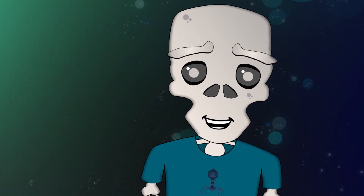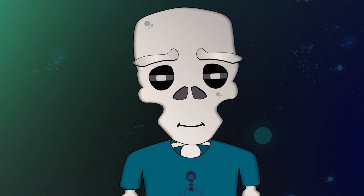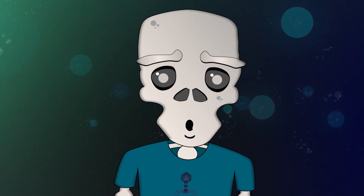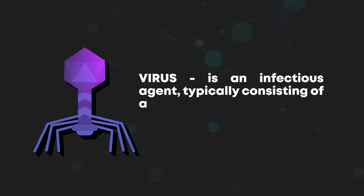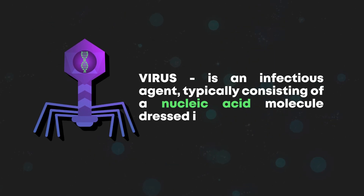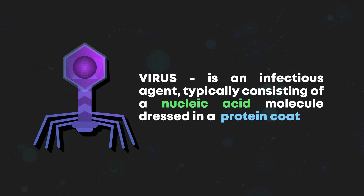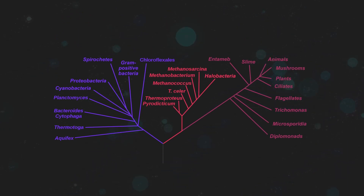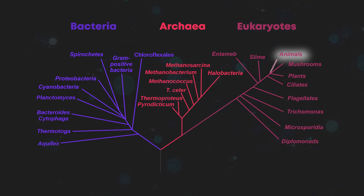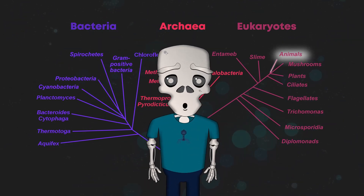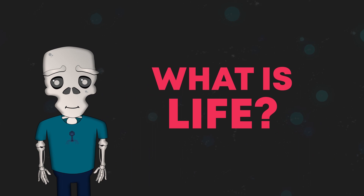Real life takes place at the microscopic level. But can we call a virus a living thing? According to the canonical definition, a virus is an infectious agent, typically consisting of a nucleic acid molecule dressed in a protein coat. And here are the kingdoms of living organisms — archaea, eukaryotes, and even bacteria. If you were wondering, you are somewhere around here. But there are no viruses here. Behind the question of what a virus is, there is a larger one: what is life itself?